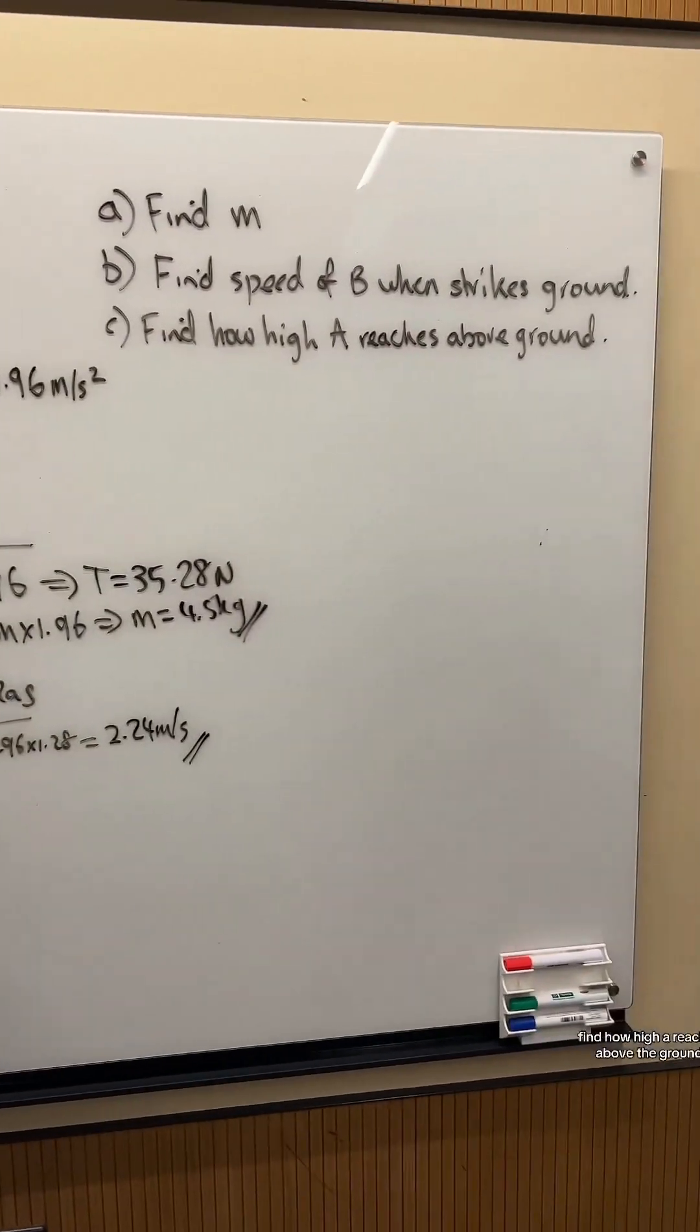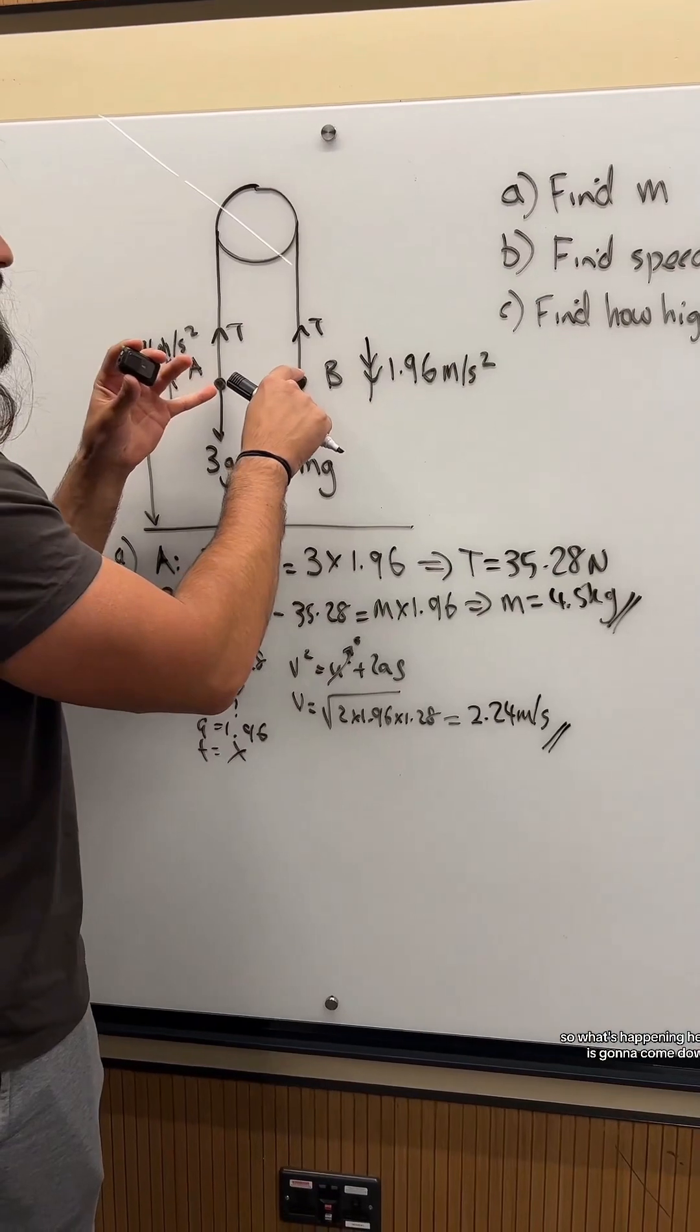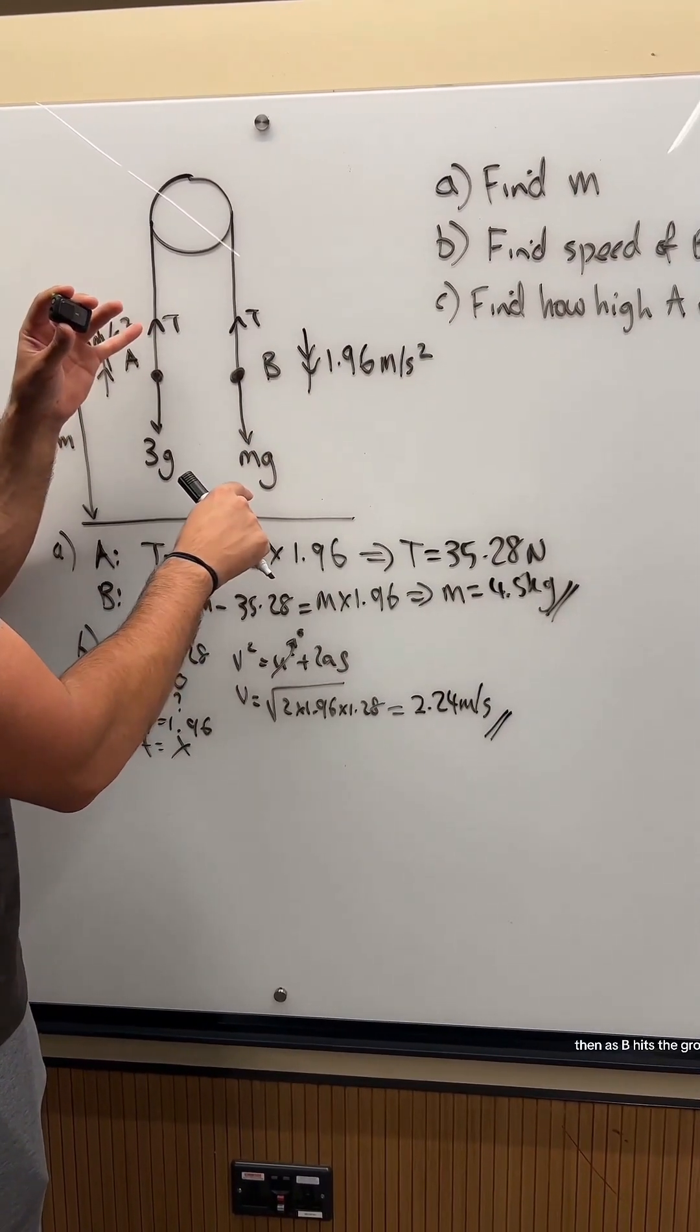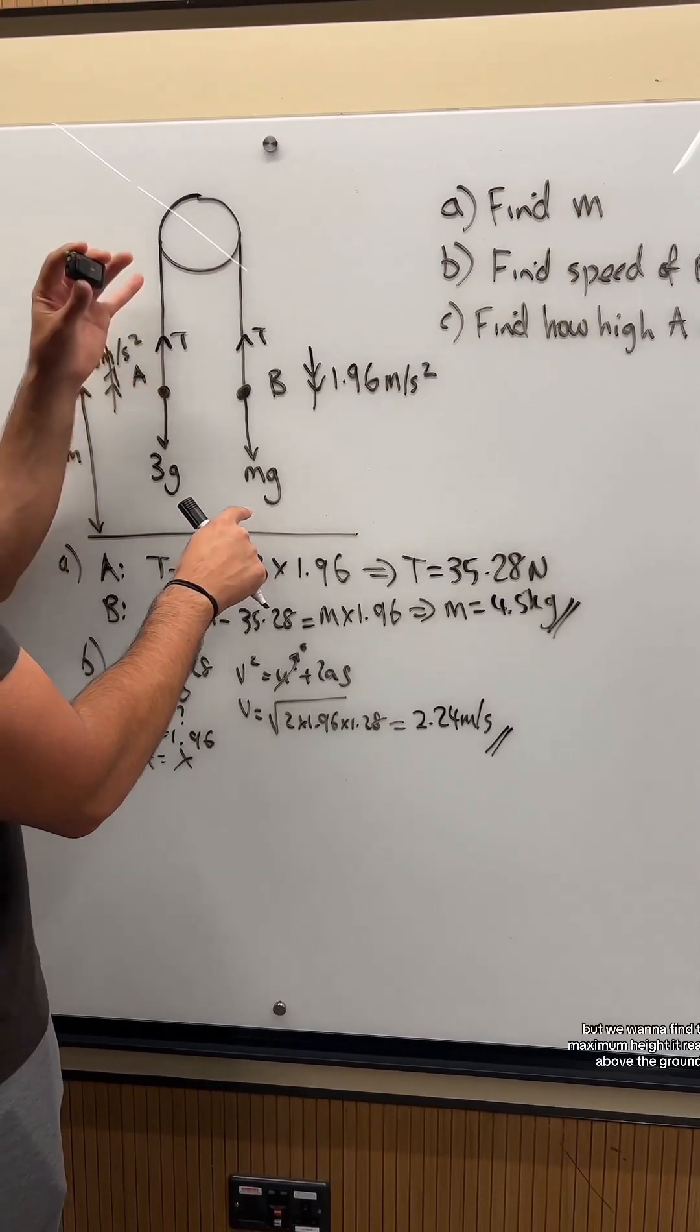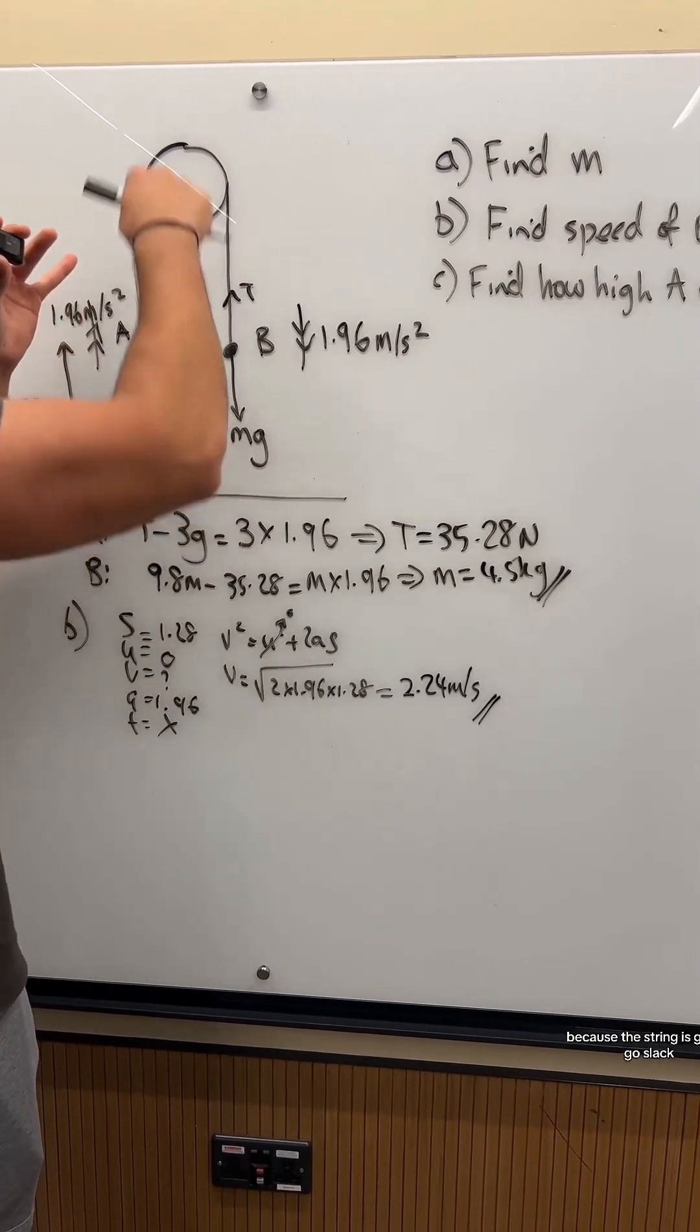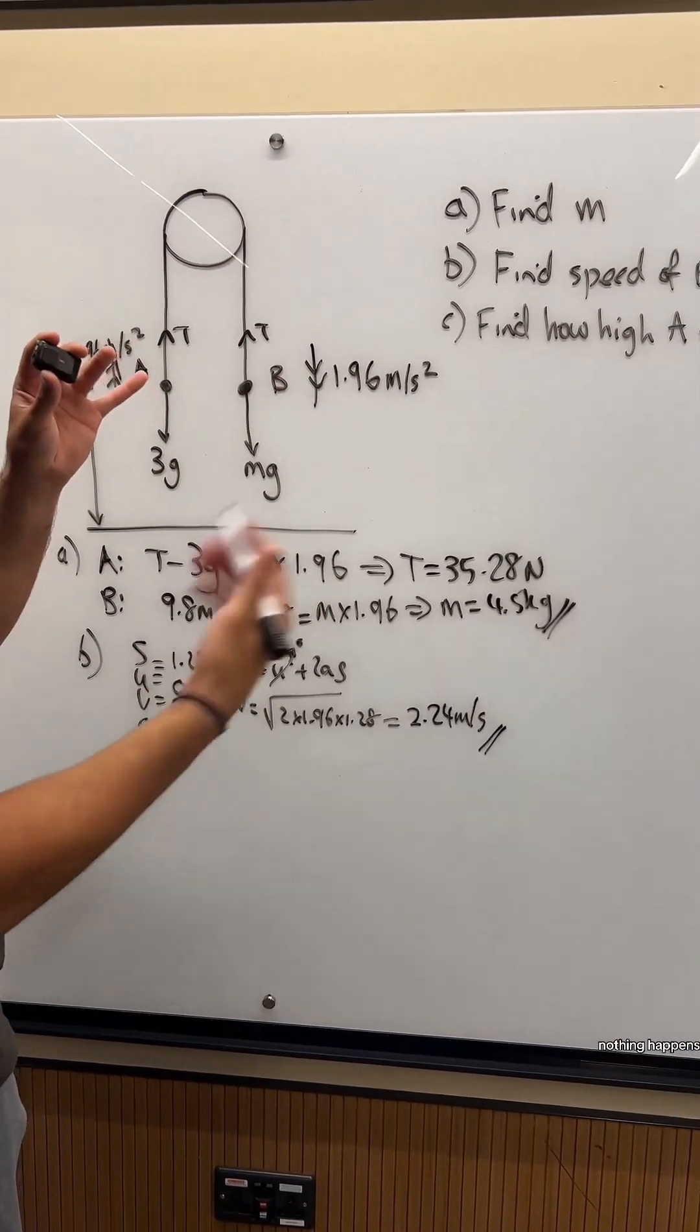Part C: Find how high A reaches above the ground. What's happening here is B is going to come down, A is going to go up. Then as B hits the ground, A is going to continue going up, then it will come back down. We want to find the maximum height it reaches above the ground because the string is going to go slack. As B hits the ground, A is going to continue on its own.